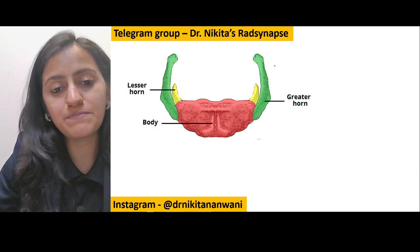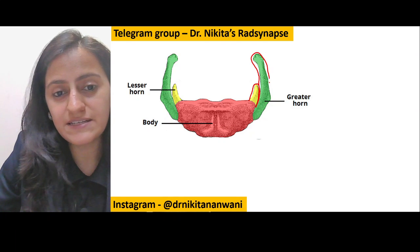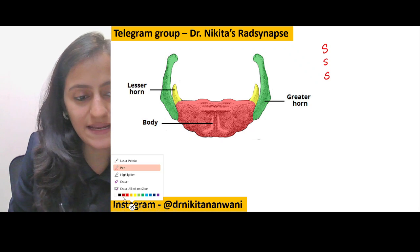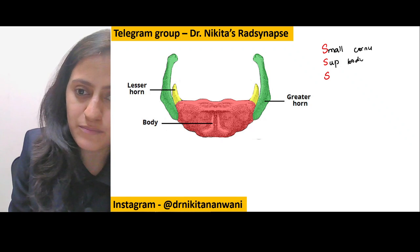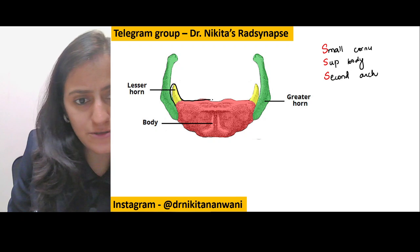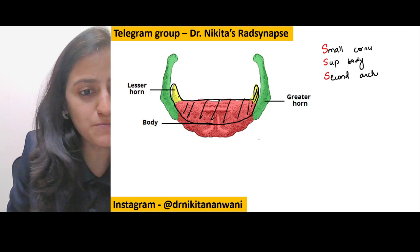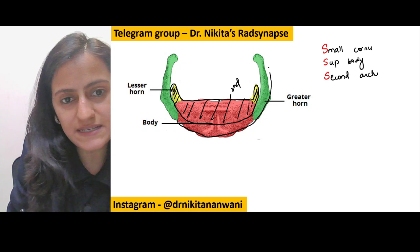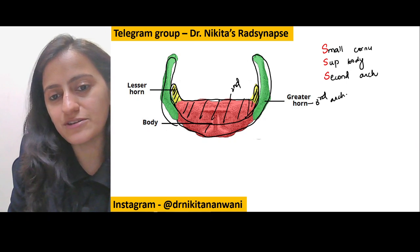Here's a quick trick on the development of the hyoid. Remember S, S, and S. The small cornu — the lesser cornu — and the superior part of the body basically develop from the 2nd arch. The lesser horn, the small cornu, and the superior part of the body: this part of the hyoid present superiorly is the 2nd arch. Below that, the inferior part and the greater cornu come from the 3rd arch.